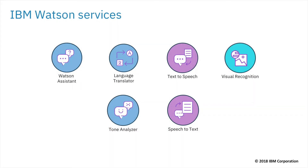TJ Bot capabilities were built using 6 IBM Watson services. Watson Assistant is used to process natural language input into intents and entities. Language Translator is used to translate text from one language to another, making TJ Bot multilingual. Tone Analyzer is used to understand the emotions represented in text. Text-to-Speech is used to enable TJ Bot to speak. Speech-to-Text is used to enable TJ Bot to listen. And Visual Recognition is used to enable TJ Bot to recognize objects and colors captured with the camera.